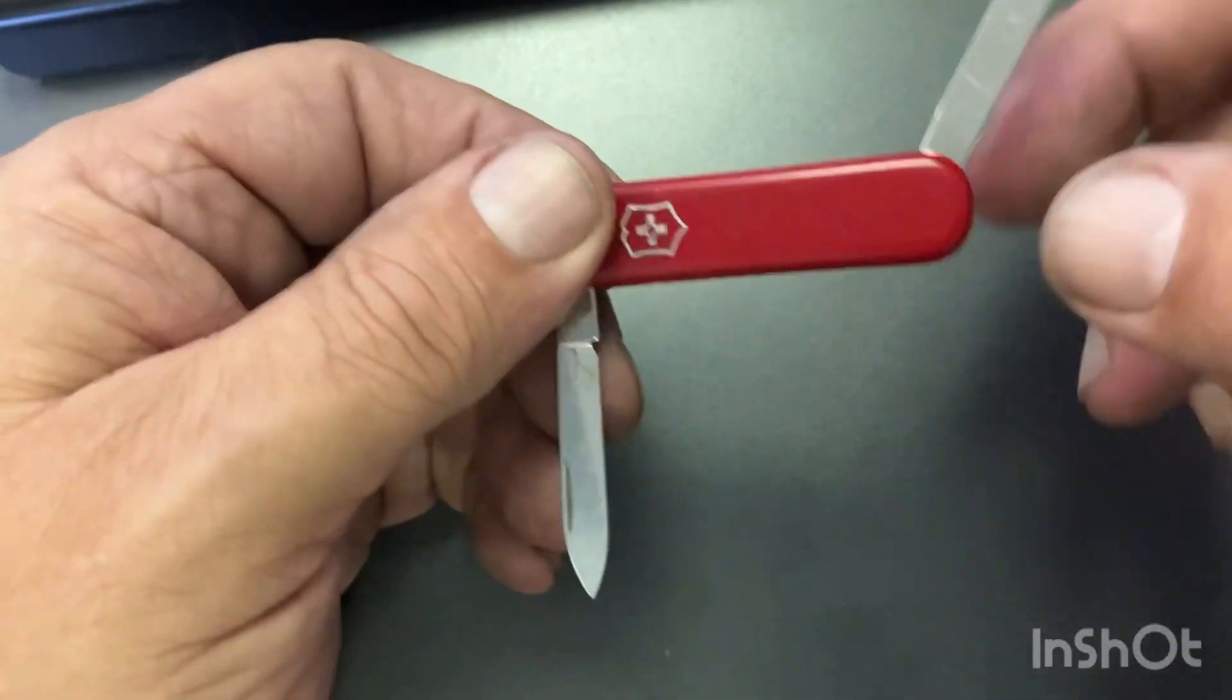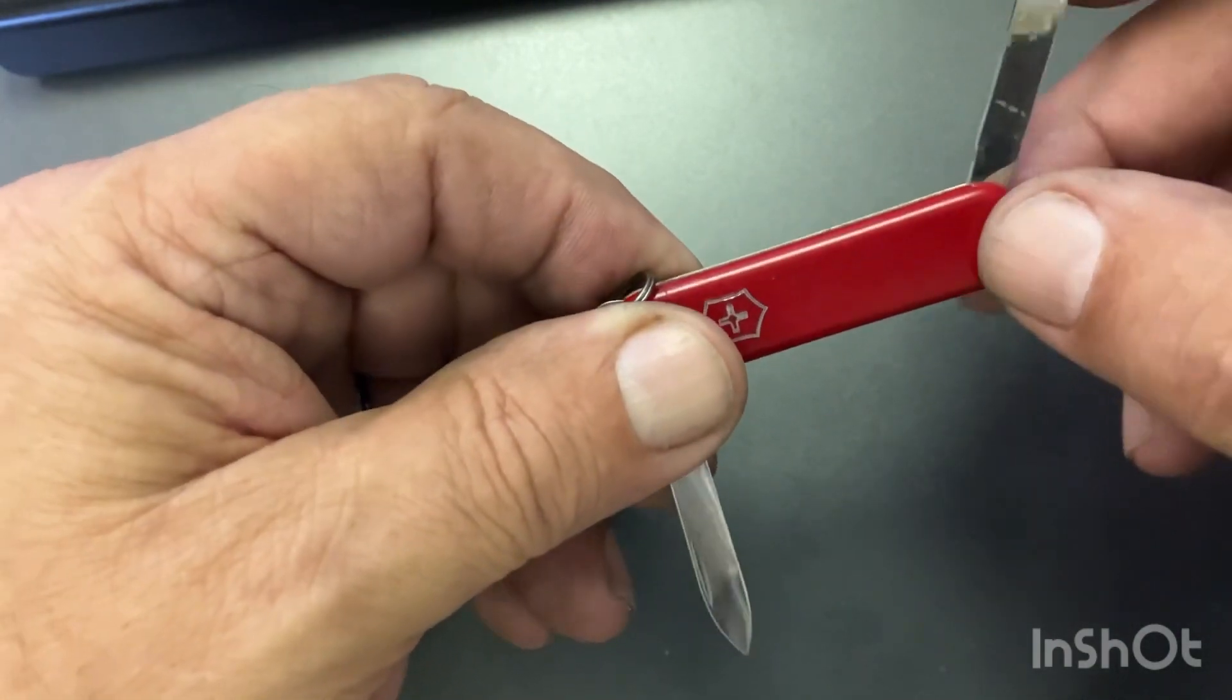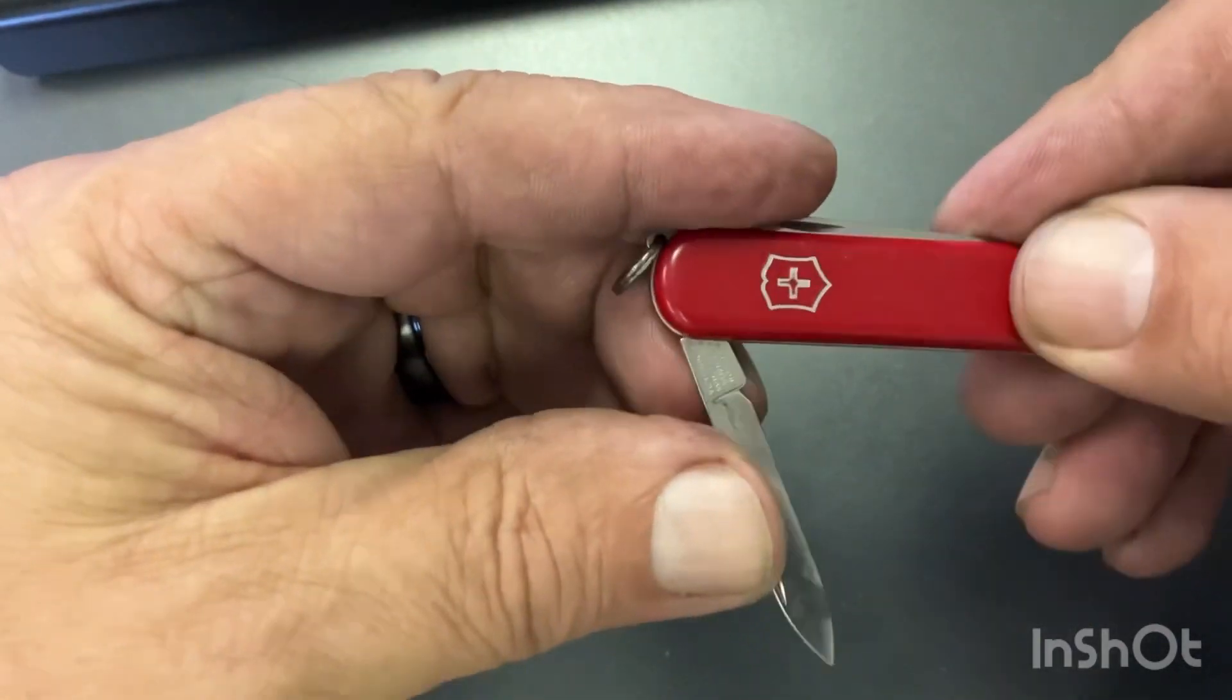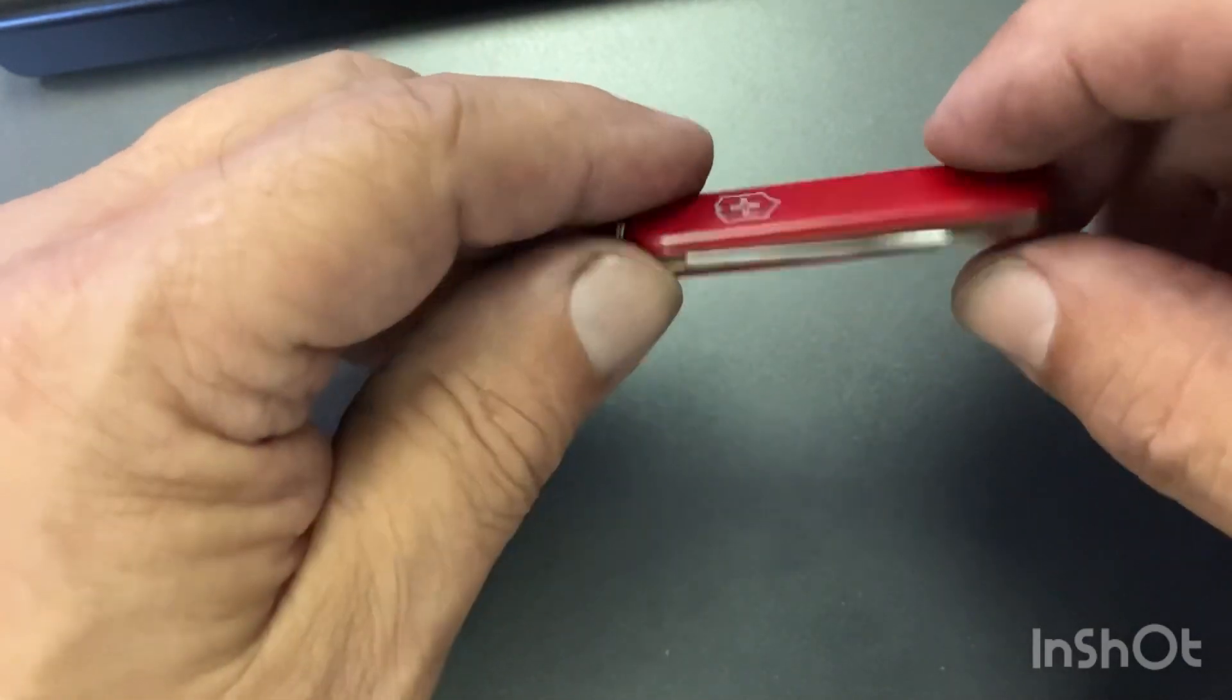And on some you'll find that they have the toothpick and the tweezers. However, this model doesn't. But some of them do, so just be aware of that.